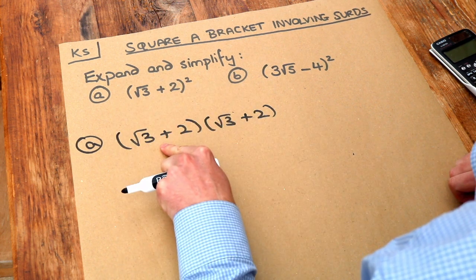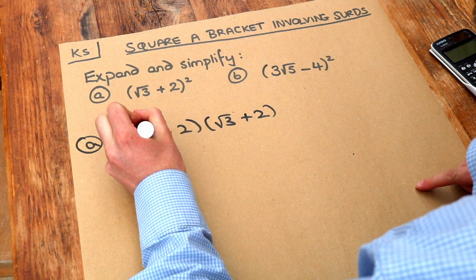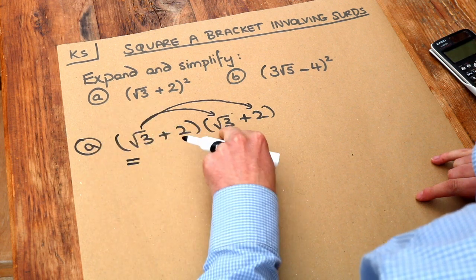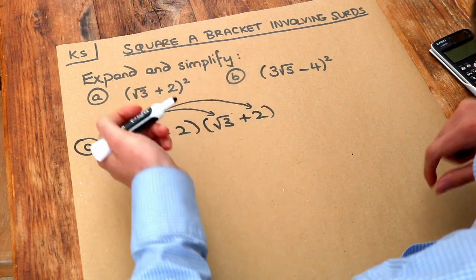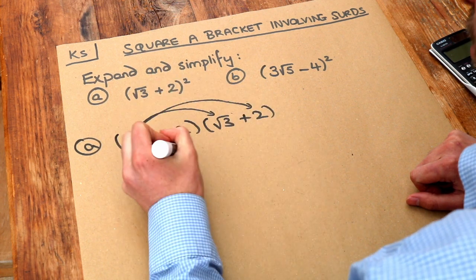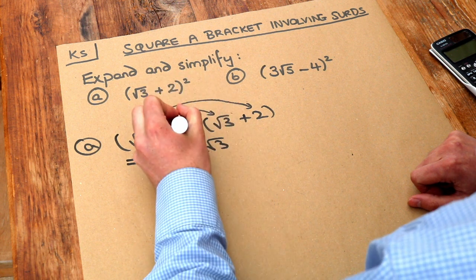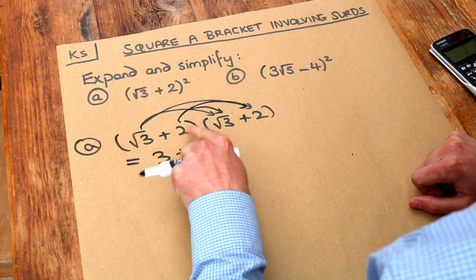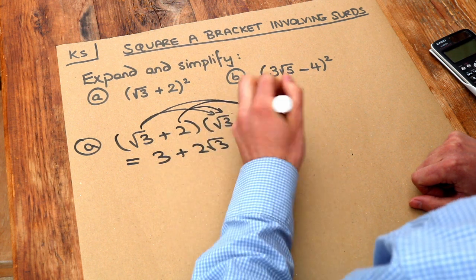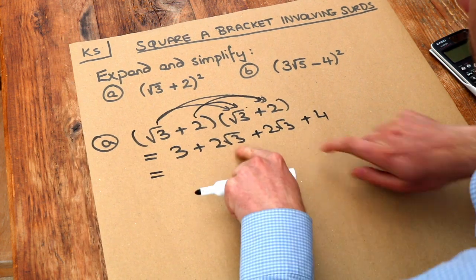We do each thing in the first bracket times each thing in the second. We do this first thing times each of the things in the second bracket. Root 3 times root 3 is root 9, and the square root of 9 is just 3. Then we do root 3 times 2, which gives 2 root 3. Then we do the second thing in the first bracket multiplied by each thing in the second: 2 times root 3 is 2 root 3, and 2 times 2 is 4. Then we simplify by collecting the surd terms together.